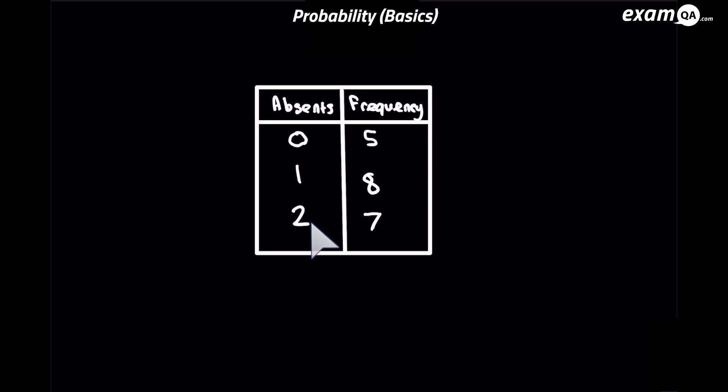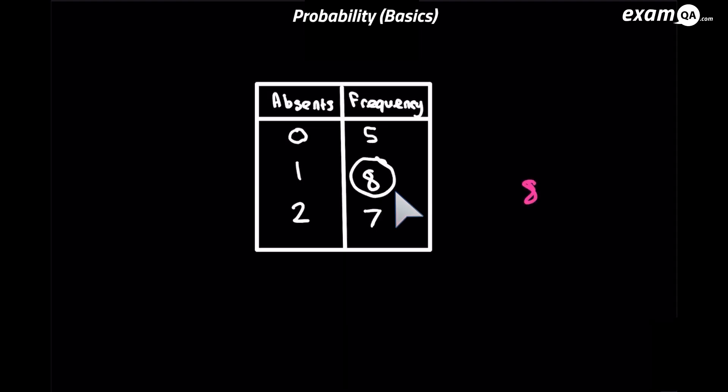So we need to look at the frequency of having one absent day. And that's just eight here. Okay, so there's eight people which had one absence.